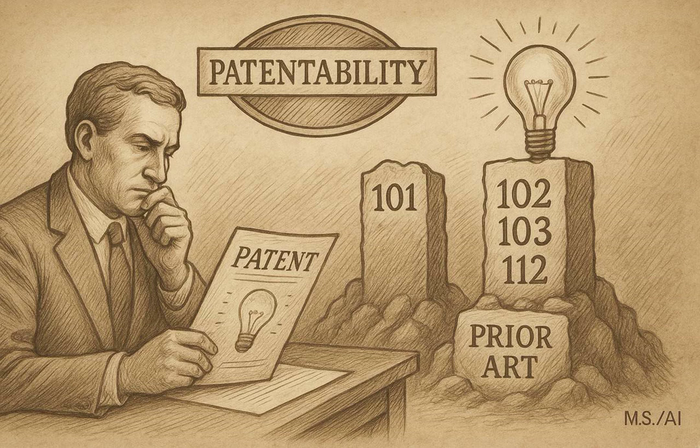The statute itself lists four categories. Your invention has to be a process, a machine, a manufacture — basically a made article — or a composition of matter, like a chemical. It is broad, but the courts have carved out exceptions — the judicial exceptions: abstract ideas, laws of nature, natural phenomena. You can't patent E=MC², you can't patent gravity, you can't patent a mathematical formula in the abstract. So the MPEP gives examiners a framework for analyzing claims that might touch on these areas.